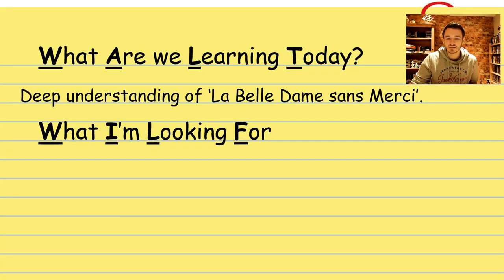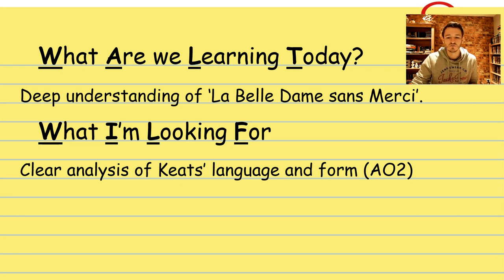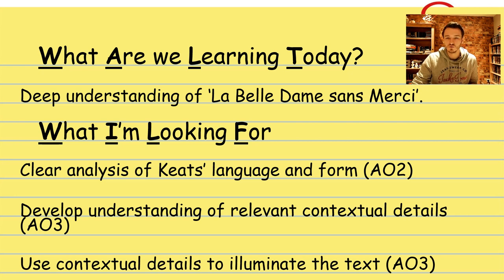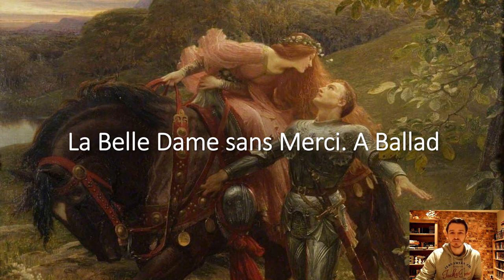What I'd like to achieve today is a deep understanding of La Belle Dame Sans Merci — we've not read the poem yet. I'm hoping we can do some really clear analysis of Keats's language and form, which will fulfil our AO2 section of the mark scheme. I'm also hoping we can develop an understanding of relevant contextual details to illuminate the text. As I've mentioned, context is not as important as the text — the text must always come first. Even though in the mark scheme we are given 30 marks for context and only 15 for analysis of the poem itself, we must place the text first. So we should start with a reading of La Belle Dame Sans Merci.